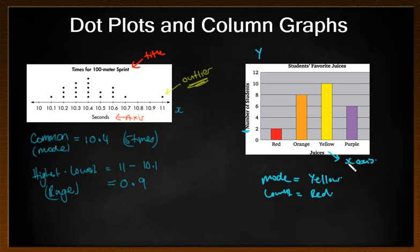So, again, a couple of things to note for both of these graphs. You must have titles for the axes. So, for example, the juices and the number of students. We must have a title for the actual graph. We've got students' favorite juices versus the times for 100-meter sprint. We need to make sure as well that the axis has an even scale for both the y and x-axis. So, you can see here that it goes up by two each time nice and evenly. For a column graph in particular, we have gaps between the columns. That's really important as well.